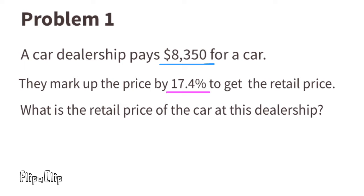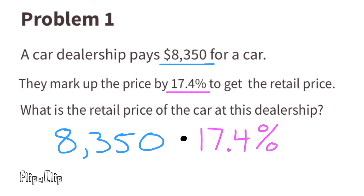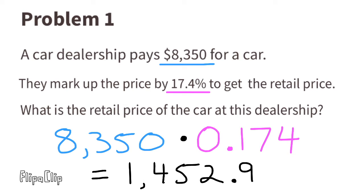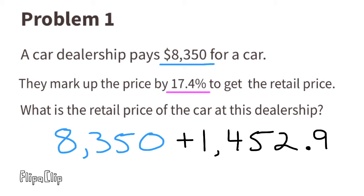To find the retail price of the car, we need to multiply the price they paid for the car by 17.4%. As a decimal, that's 0.174. So 8,350 times 0.174 equals $1,452.90. This is the amount that the dealership is going to add to the price they paid for the car.